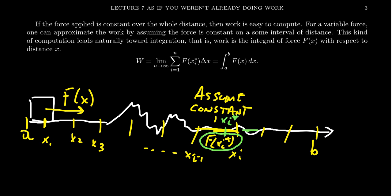And so the force is equal to f of xi star just for that interval. For the next interval, we pick a different force. For the next one, we pick a different force. So we'll assume that it's constant on that little chunk.